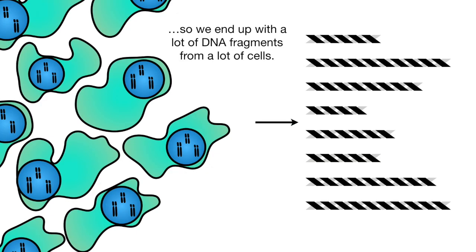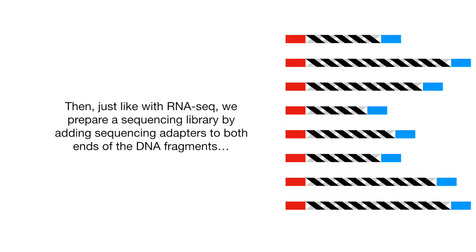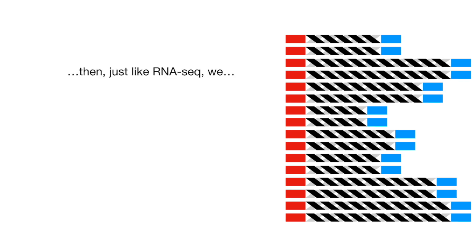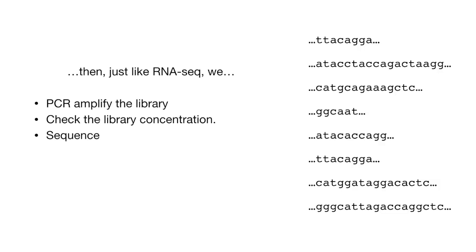So we end up with a lot of DNA fragments from a lot of cells. Then, just like with RNA-seq, we prepare a sequencing library by adding sequencing adapters to both ends of the DNA fragments. Then, just like RNA-seq, we PCR-amplify the library, check the library concentration, sequence, filter out garbage reads.